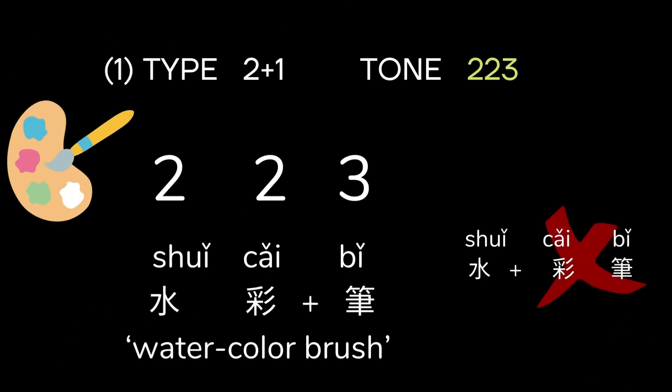The pronunciation of the two-plus-one type is second-second-third. This pattern shows that the word was formed from the first two characters before the third character was added to create a three-character term. For instance, 水彩笔, which means watercolor brush, is formed from the first two characters 水彩, which means watercolor, and the last character 笔, which means brush.